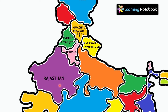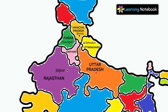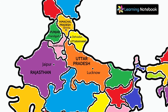Now this is Rajasthan and its capital is Jaipur. This state is Uttar Pradesh and its capital is Lucknow.